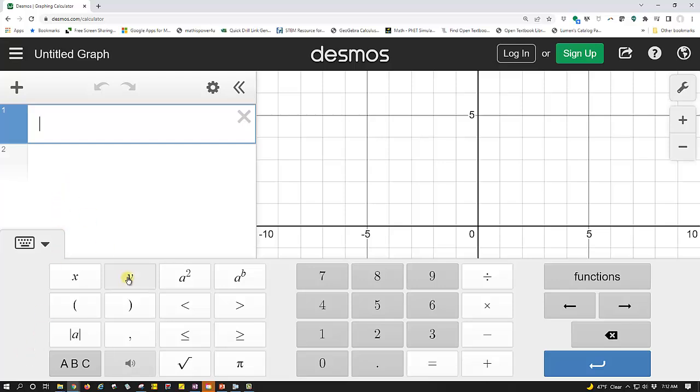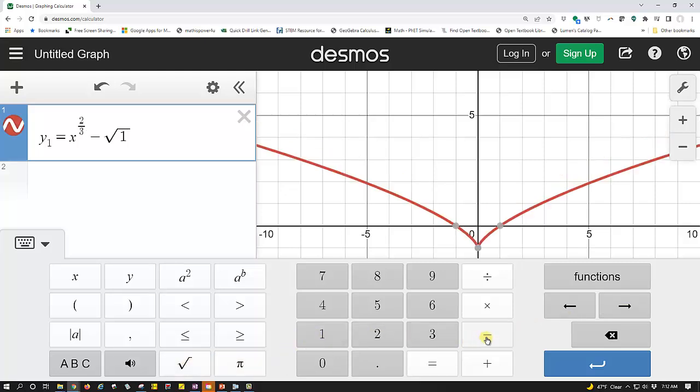In cell one, we enter y1 equals x to the power of two divided by three, right arrow, right arrow, minus the square root of the quantity one minus x squared, enter.